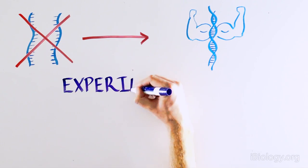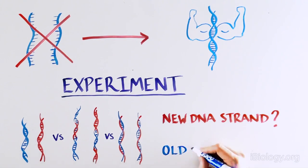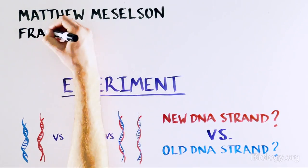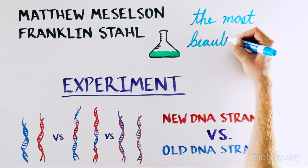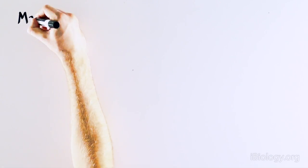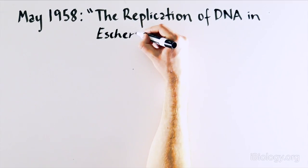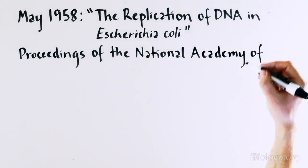The only way to solve this was to create an experiment to tell the new DNA strand from the old one. So two scientists, Matthew Meselson and Franklin Stahl, had an idea to design an experiment that would be known as the most beautiful experiment in biology. Their findings are published in their article titled, The Replication of DNA in E. Coli, published in May 1958 in the Proceedings of National Academy of Sciences.